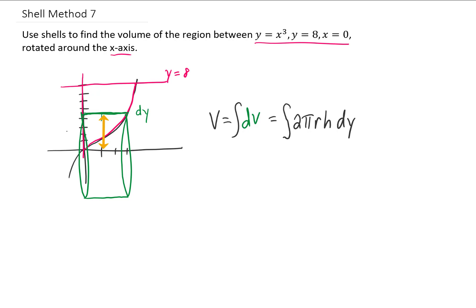Now in this case, the radius of each one of these shells is given by whatever y value we choose in this region between y equals zero and y equals eight. So in other words, our radius is just y.